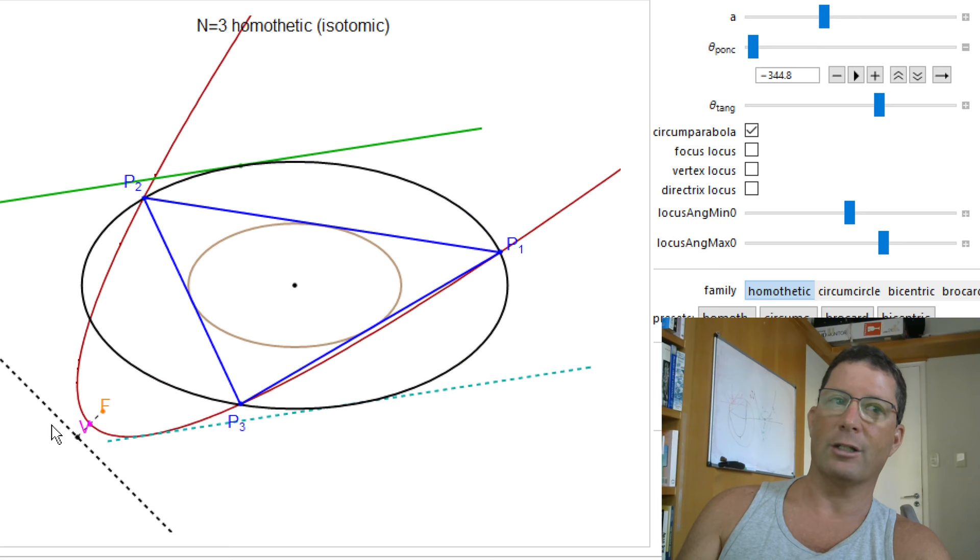I'm showing the focus of the circumparabola, its vertex and its directrix, right? All these circumparabolas happen to be tangent, mysteriously, to this opposite line or this reflected image of the green line with respect to the center of the system. So this is property number one.